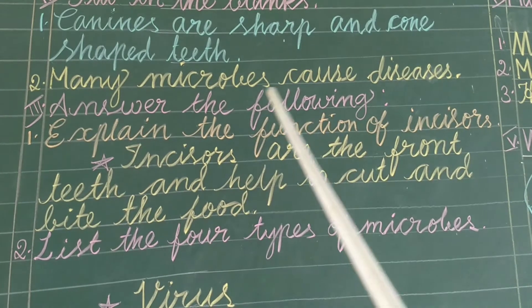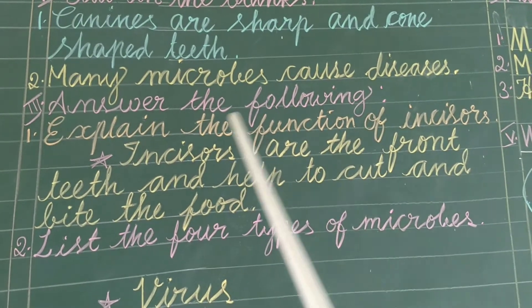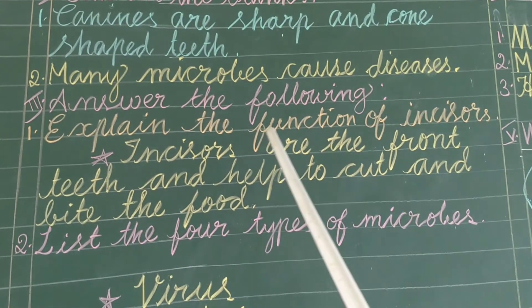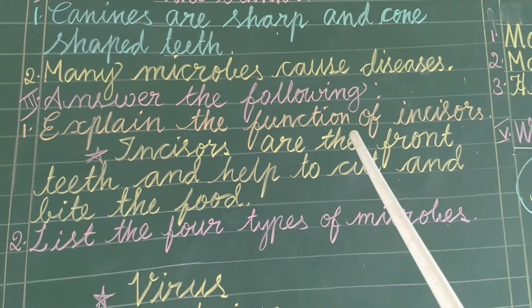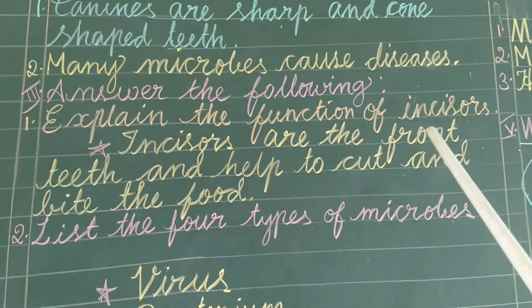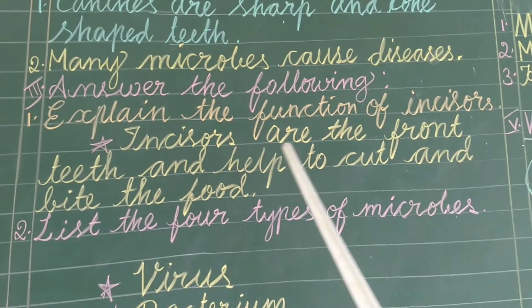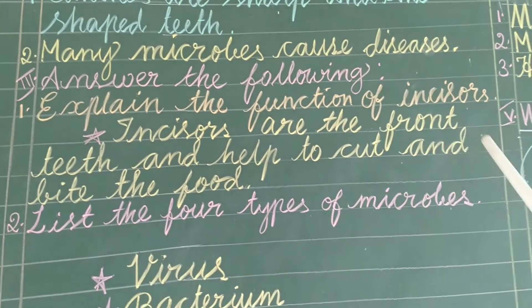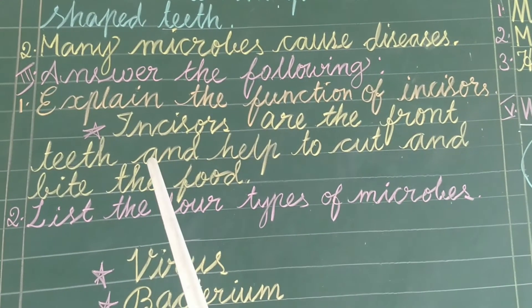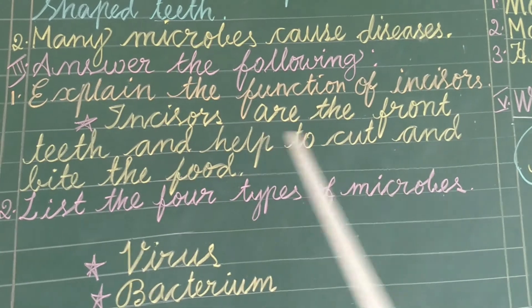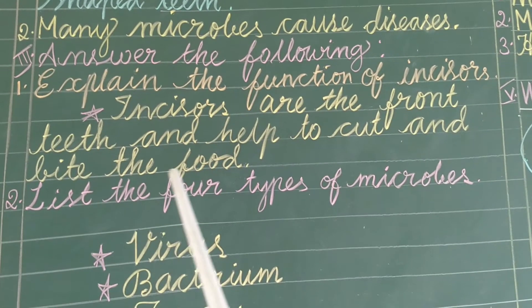Third Roman, answer the following. Explain the function of incisores. Incisores are the front teeth and help to cut and bite the food.